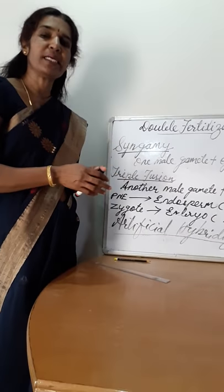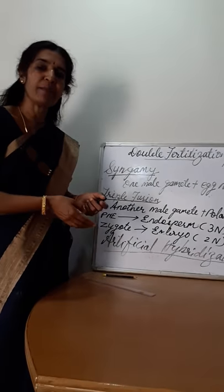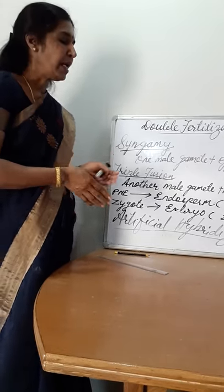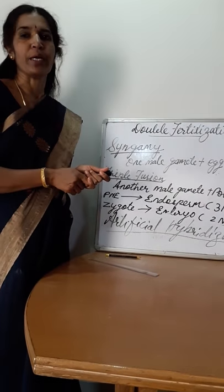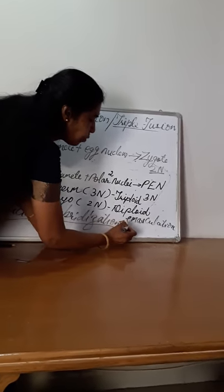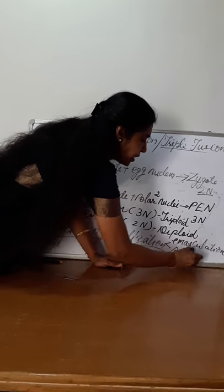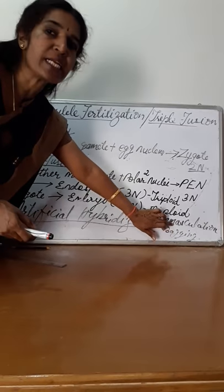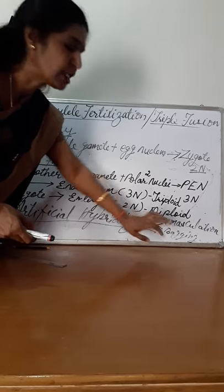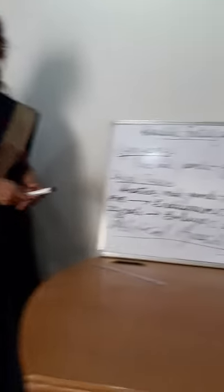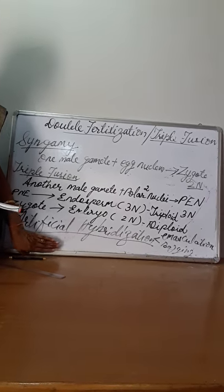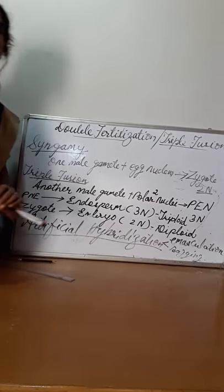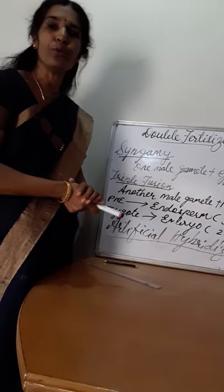The next process: to prevent the landing of undesired pollen on the stigma, that flower has to be covered by a paper bag. Then, when the stigma attains maturity, the desired pollen can be dusted on the stigma. These are the two processes — emasculation, removal of anther from a bisexual flower, and the bagging technique — used in artificial hybridization to attain a desired character. After the stigma matures, the pollen is dusted on the stigma and it is allowed to fertilize further.